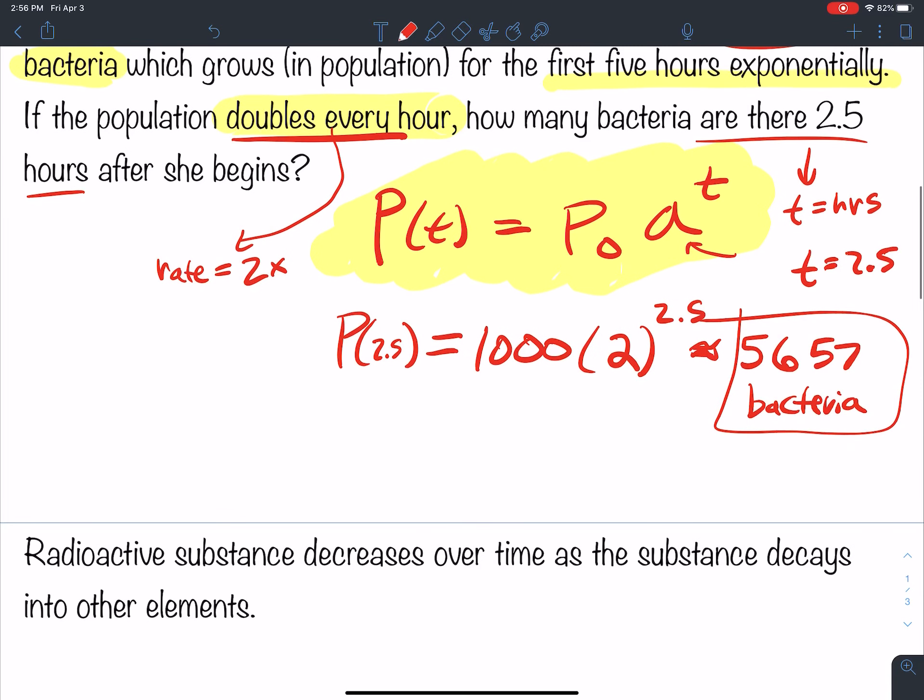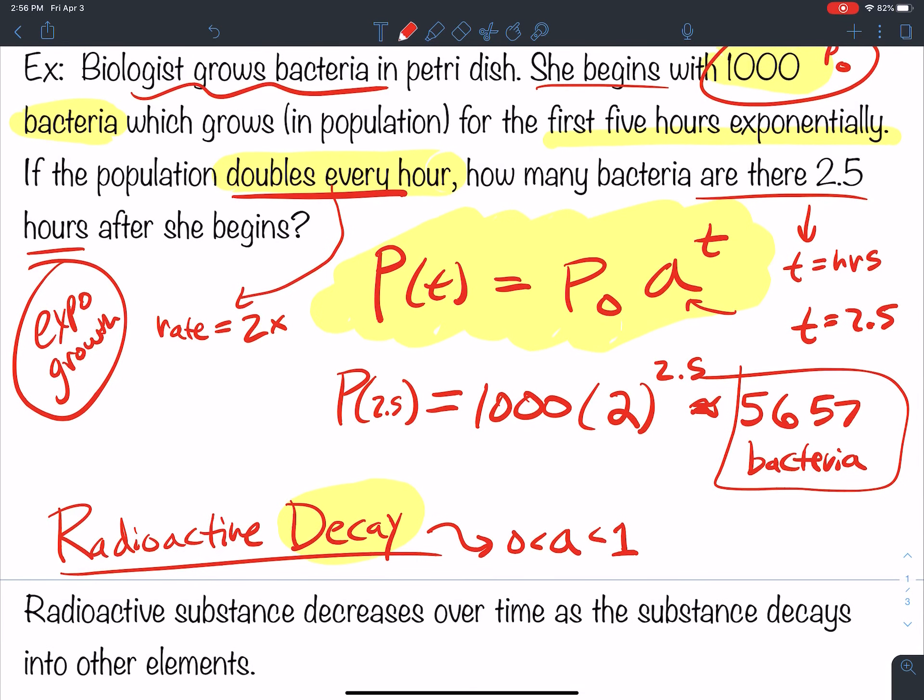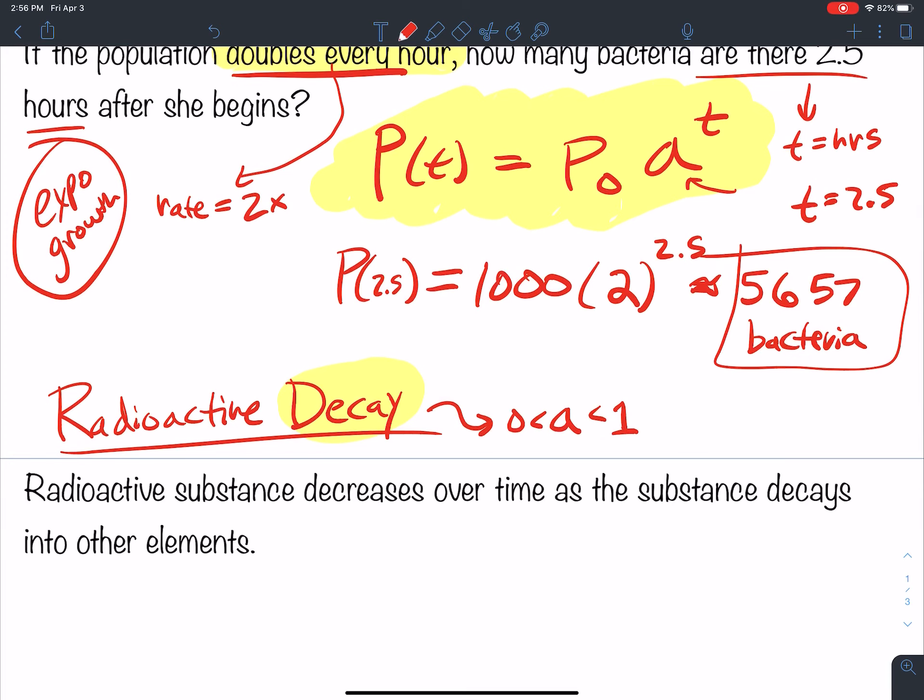Let's talk about radioactive decay. Radioactive decay. When we're talking about a decay function, we know our base A, our growth rate, is between 0 and 1. We're not doubling. We're decaying here. This isn't exponential growth anymore. So that was an exponential growth problem. That was a growth problem. The bacteria grows, right? The virus grows, whatever. Radioactive substance decreases over time as the substance decays into other elements.